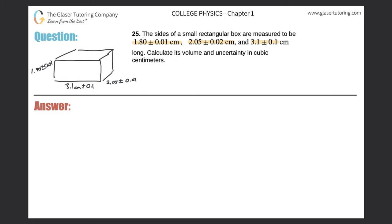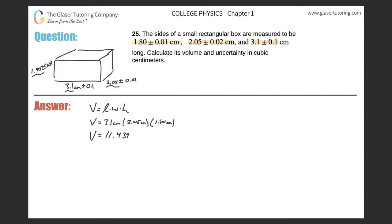Calculating the volume — we have a rectangular box, so the volume would be length times width times height. To find the volume, simply take all the base values: 1.80, 3.1, and 2.05, and plug them in. So the length is 3.1 cm, the width is 2.05 cm, and the height is 1.80 cm. That gives us 3.1 times 2.05 times 1.8, which comes out to 11.439 centimeters cubed.